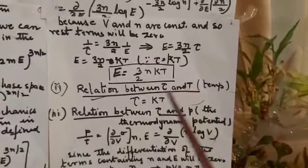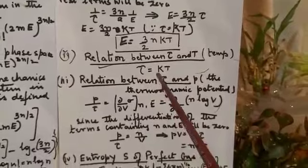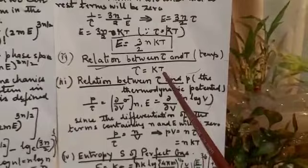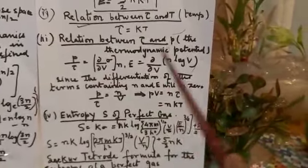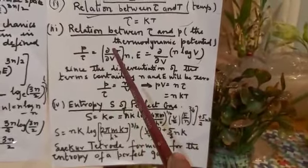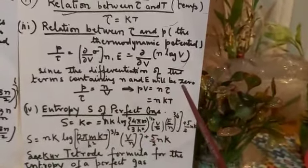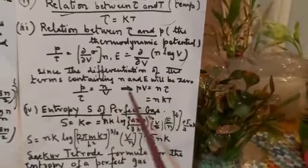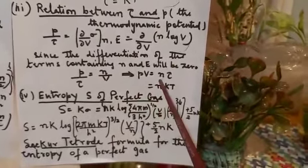The relation between tau and thermodynamic temperature T is: tau = k T, where k is the Boltzmann constant. For the relation between tau and pressure p: p/tau = d sigma / dV at constant N and E, which gives d/dV of N log V = N/V. Therefore p V = N tau = N k T — the ideal gas law.